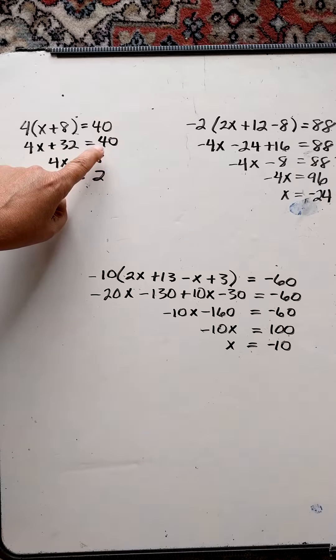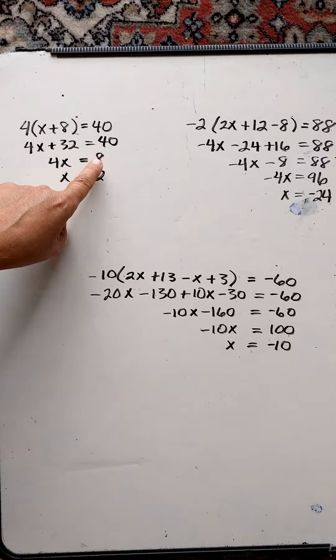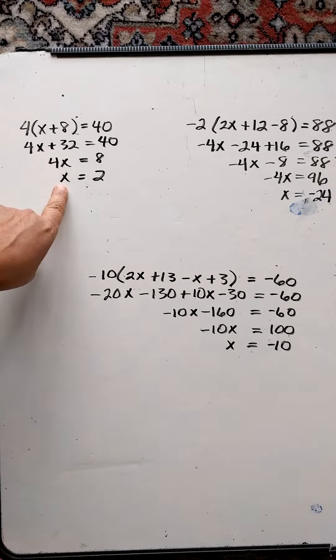I subtract 32 from both sides, and I'll get 4x equals 8, and then divide both sides by 4, so x equals 2.